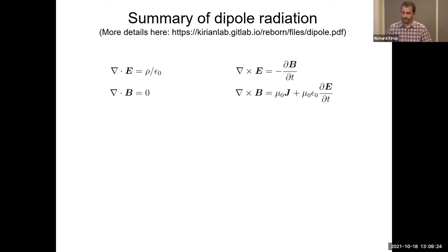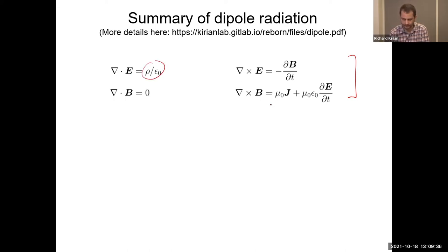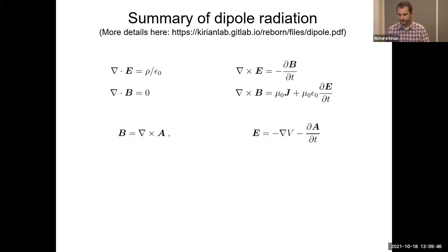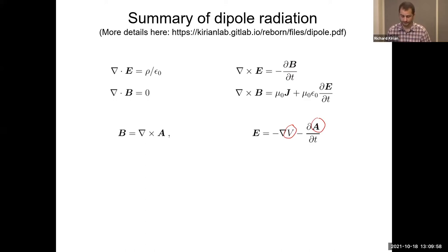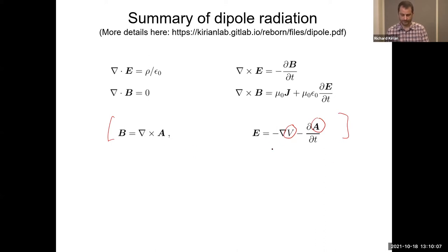No better place to start than Maxwell's equations. Written here for vacuum, we have the E field, the B field, and source terms — charge density and current density J, following the route from Griffiths. We work in terms of the scalar potential and vector potential, which lead to more convenient inhomogeneous wave equations. All undergraduates who've gone through at least the first half of electromagnetism have seen the vector and scalar potentials.